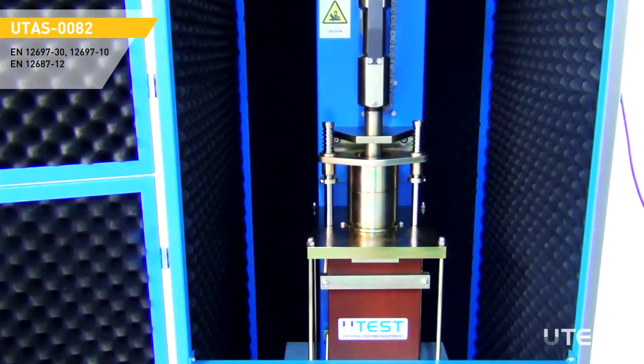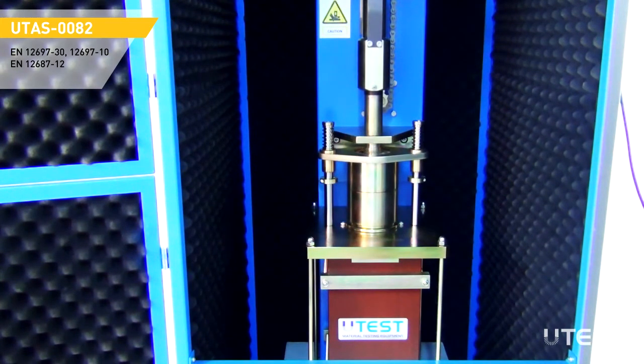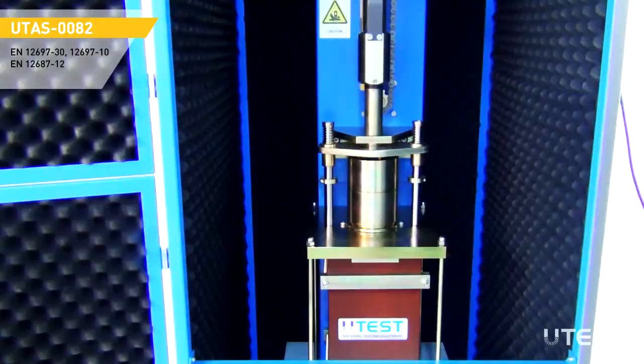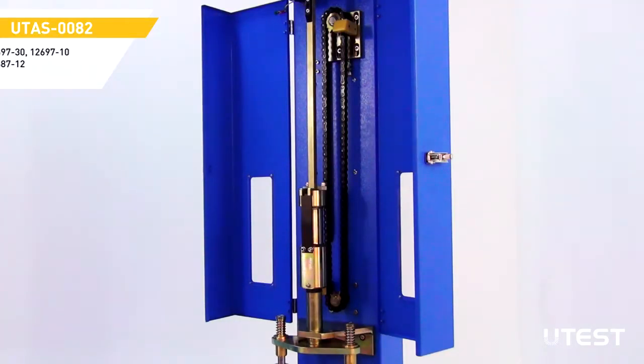Marshall mold is placed upon this steel plate and the mold is fixed in place automatically by a motorized mechanism. This mechanism also lifts and releases the hammer automatically from a specific height which conforms to the standards.